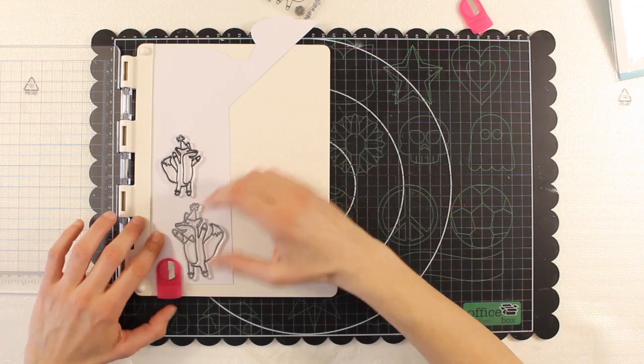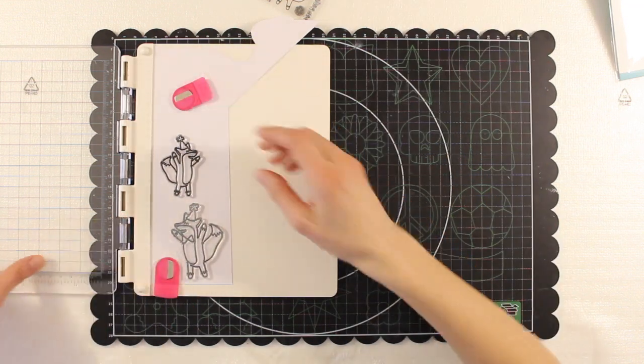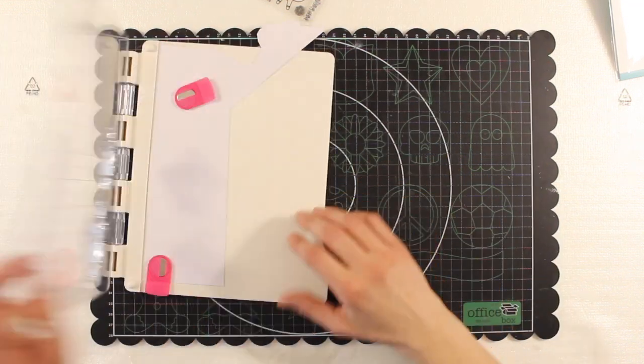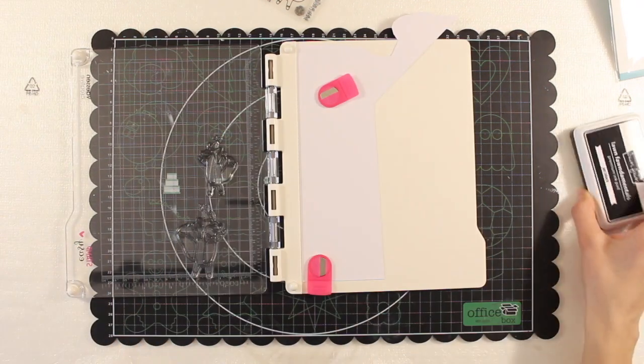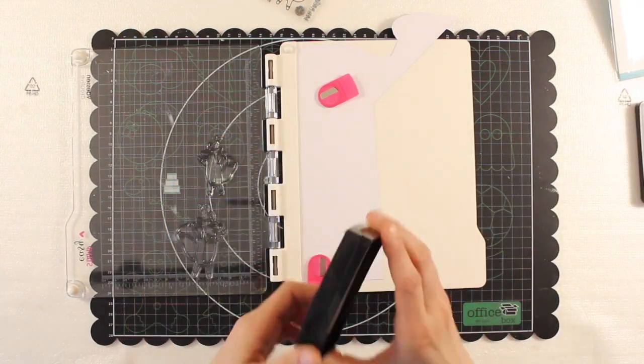I put the stamps on the paper where I want the images to be and then I stick them to the lid of the stamping tool and I ink them.